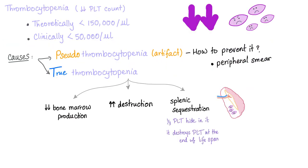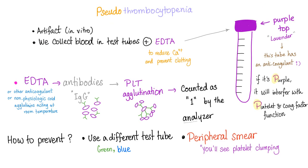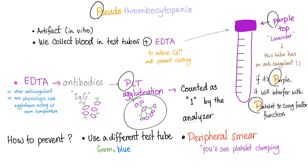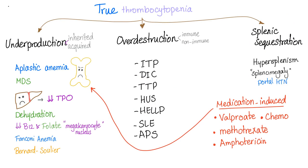Thrombocytopenia is decreased platelet count. We have two types: pseudothrombocytopenia, which is not an actual thrombocytopenia, and true thrombocytopenia. Pseudothrombocytopenia is fake. It occurs in the purple top test tube, which interferes with platelet and coagulation factor function, leading to platelet agglutination. The clump is counted by the machine as one platelet when in fact there are eight. To prevent pseudo, use a different test tube or order a peripheral blood smear. The causes of true thrombocytopenia are, in fact, the causes of petechiae.